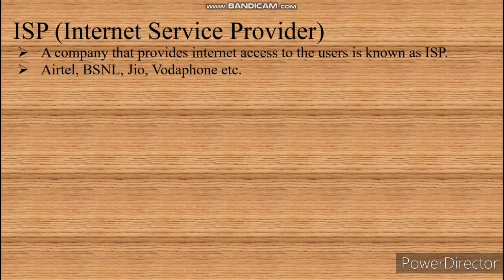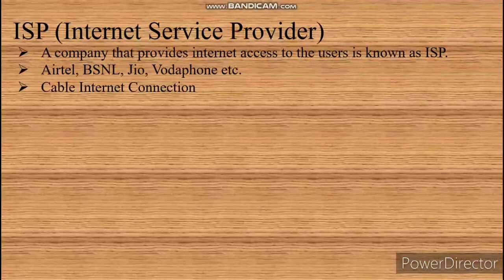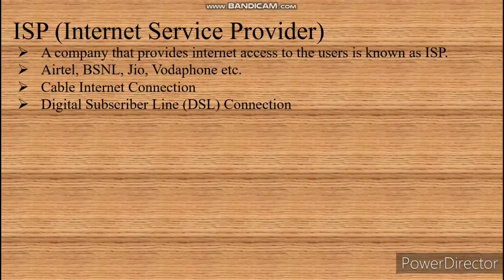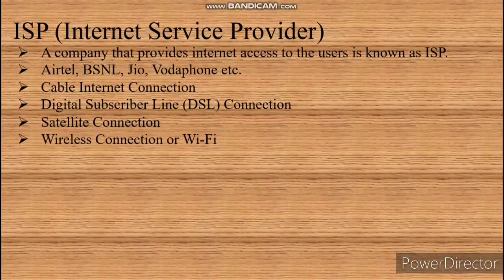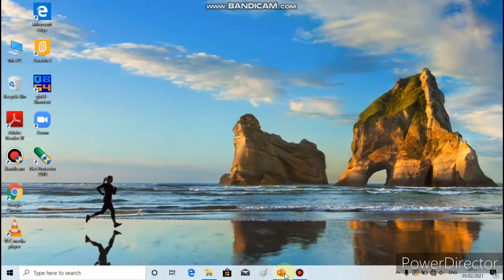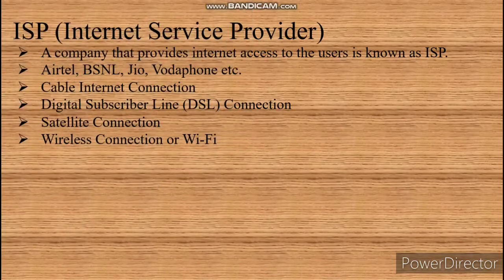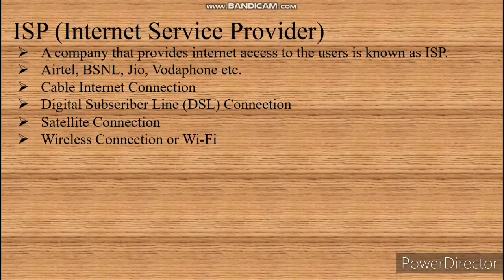An ISP may provide different types of internet connections such as cable internet connection, Digital Subscriber Line (DSL) connection, satellite connection, wireless connection, or Wi-Fi connection. The hardware required for establishing the connection, such as a router or cable, is usually provided by the company.